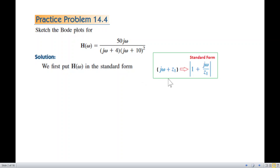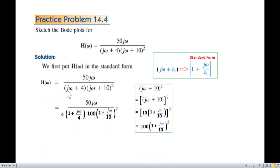The standard form is given as one plus j omega over z1. We need to take common factors and convert it correctly to get the proper standard form.